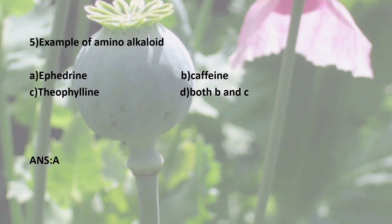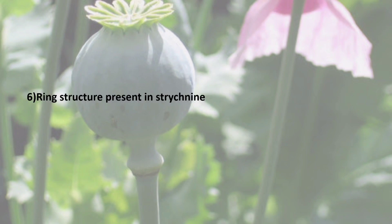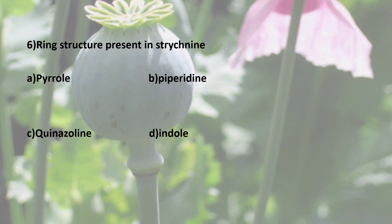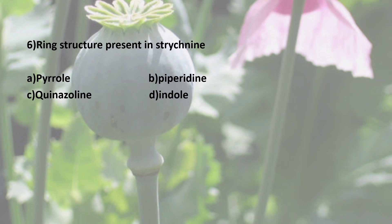Sixth question: Ring structure present in Strychnine. What type of chemical ring? Options are: A) Pyrrole, B) Piperidine, C) Quinazoline, D) Indole. Strychnine is classified under Indole Alkaloids. The correct answer is D — the ring structure present in Strychnine is Indole.